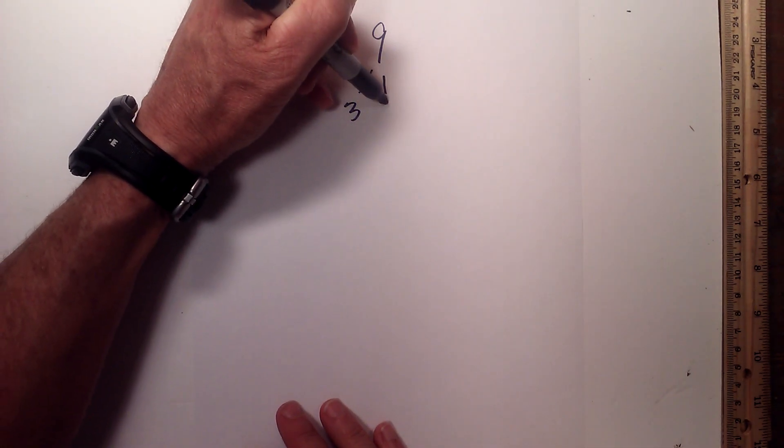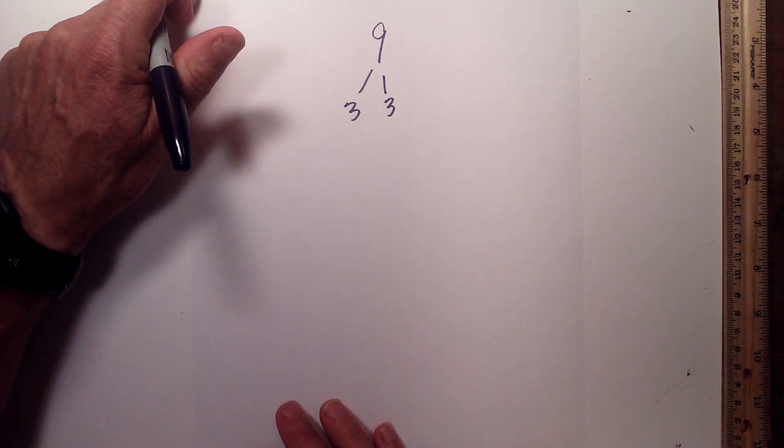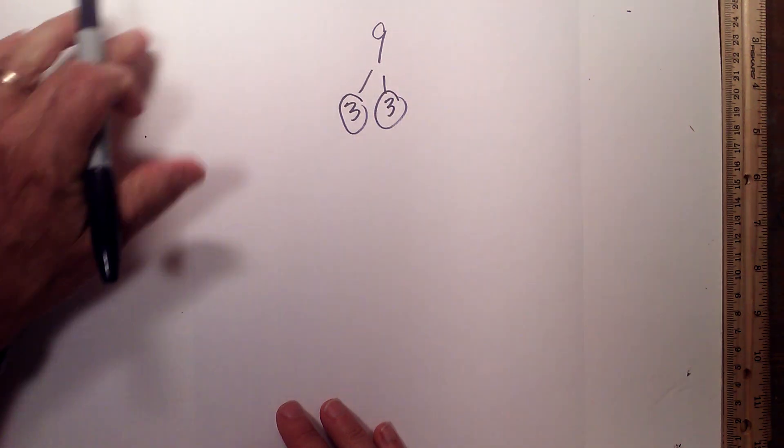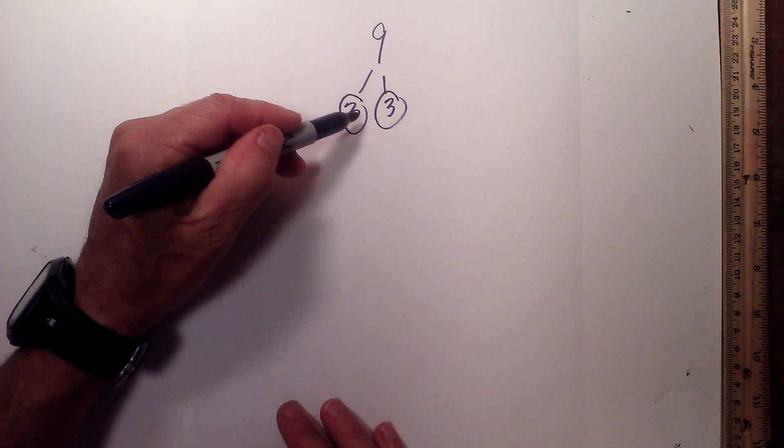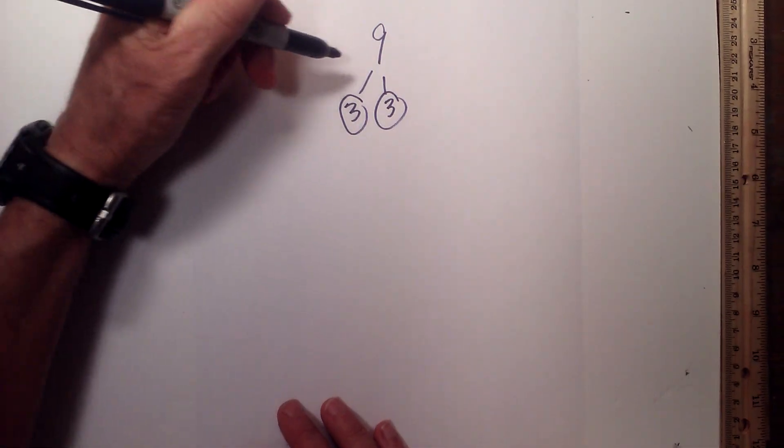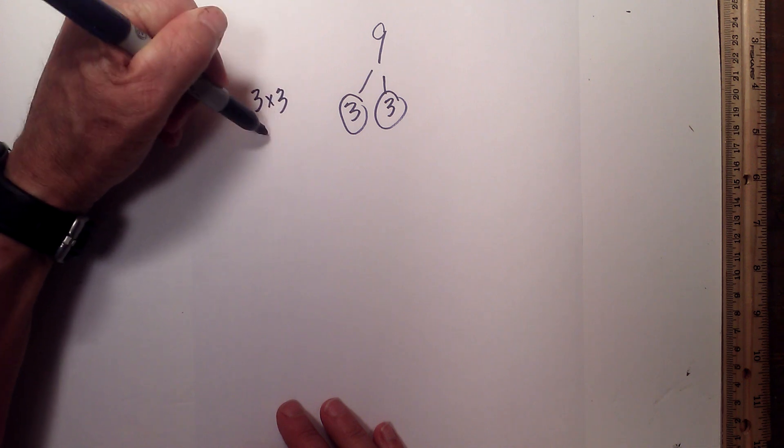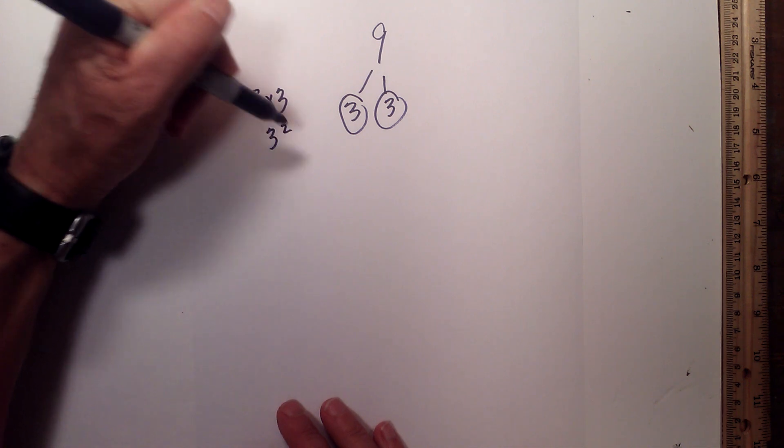We have 3 times 3 equals 9. We will circle both of the 3's because they are prime and we are down to prime numbers. The prime factorization of 9 is 3 times 3, or 3 squared.